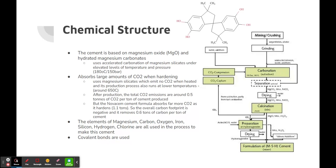The cement is based on magnesium oxide (MgO) and hydrogen magnesium carbonates. It uses accelerated carbonation of magnesium silicates under elevated levels of temperature and pressure. It absorbs large amounts of CO2 when hardening. It uses magnesium silicates which emit no CO2 when heated, and its production process runs at lower temperatures around 650 degrees Celsius. After production, the total CO2 emissions are around 0.5 tons of CO2 per ton of cement produced. However, the NovaCem cement formula absorbs far more CO2 as it hardens: 1.1 tons.